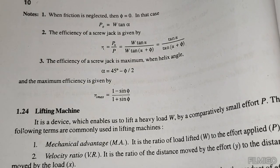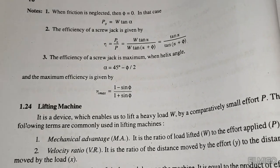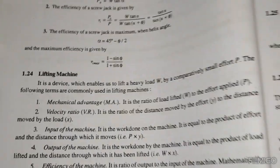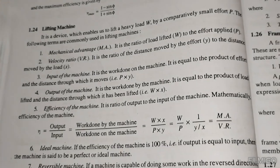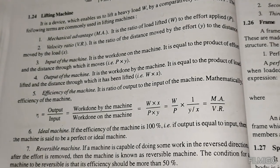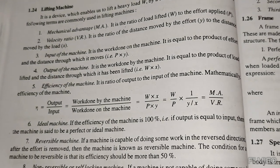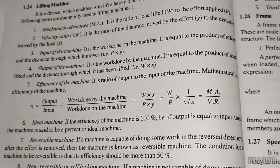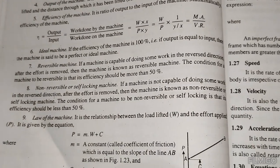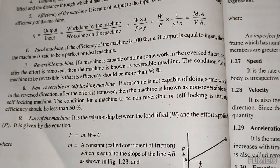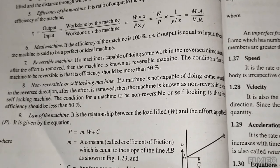The efficiency of a screw jack simplifies to tan alpha divided by tan of alpha plus phi. Maximum efficiency occurs at helix angle 45 minus phi divided by 2. The maximum efficiency eta_max equals 1 minus sin phi divided by 1 plus sin phi. For a machine: output divided by input equals work done by machine divided by work done on machine, which equals W times x divided by P times y, also written as M_A divided by V_R.